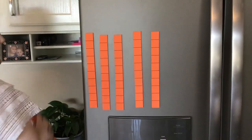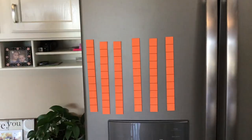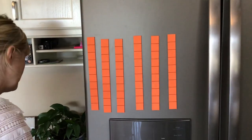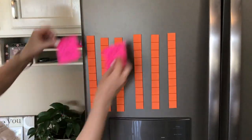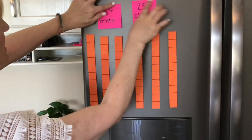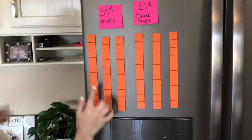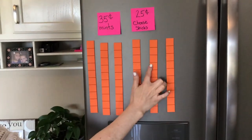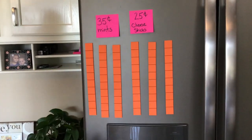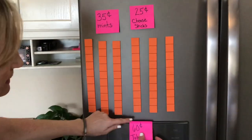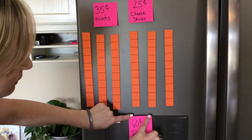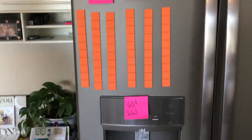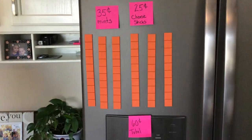Now I can see how much it costs to get both the mints and the cheese sticks. I'll need $10, $20, $30, $40, $50, $60 total to get both the mints and the cheese sticks. Let's try another one.